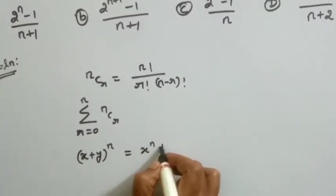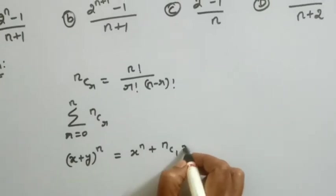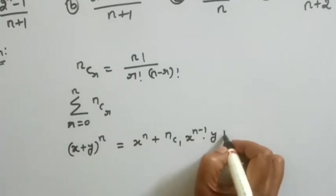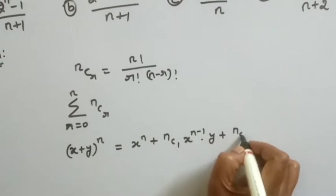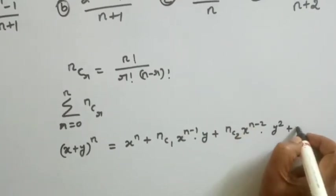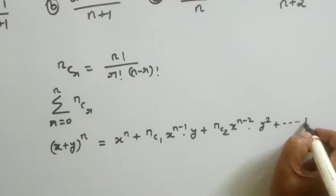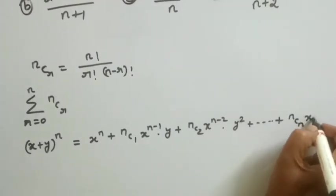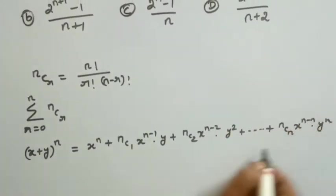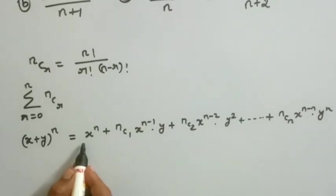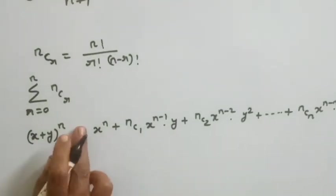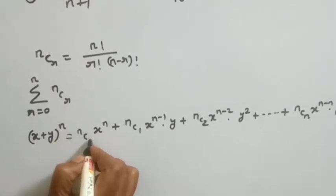The binomial series expansion is: X power N plus NC1 times X power N minus 1 into Y, plus NC2 times X power N minus 2 into Y squared, and so on.